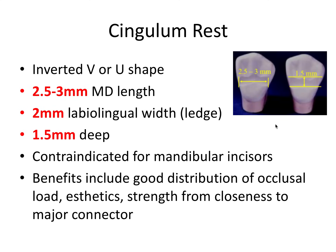Next we have the cingulum rest, which is much different because it's on a different surface. Instead of having the spoon shape, we have an inverted V or U shape design. The cingulum rest contacts the cingulum area of an anterior abutment tooth — could be an incisor, though not very likely; usually more so a canine. The measurements here are slightly different.